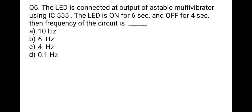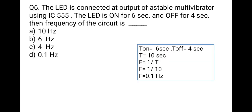The next question: an LED is connected at the output of an astable multivibrator using IC 555. The LED is on for 6 seconds and off for 4 seconds. The frequency of the circuit is? Options: 10 Hz, 6 Hz, 4 Hz, or 0.1 Hz. T-on is 6 seconds, T-off is 4 seconds, total T is 10 seconds. Frequency equals 1/T = 1/10 = 0.1 Hz. Correct option is D, 0.1 Hz.